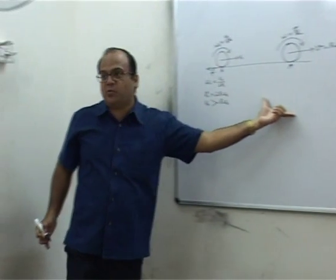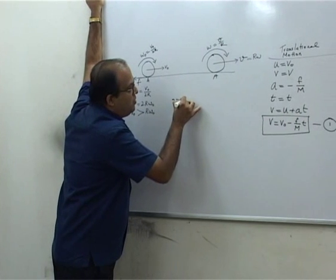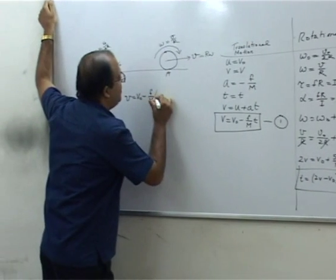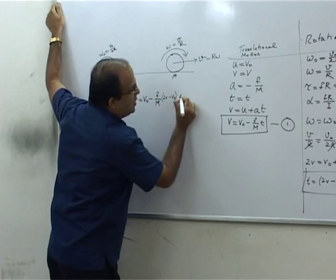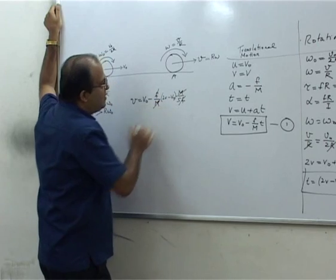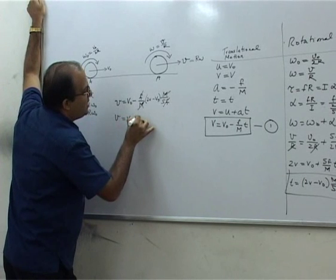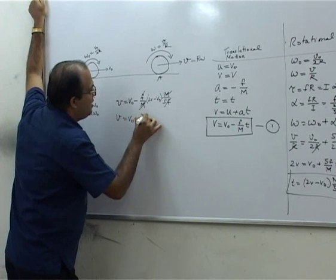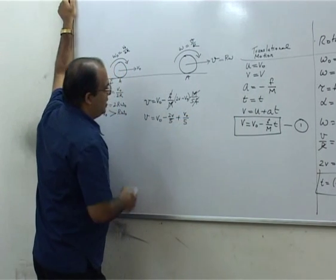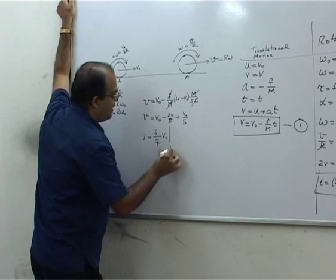Substituting this time into equation 1: v equals v0 minus f by m times (2v minus v0) times m by 5f. Friction and mass cancel out, giving v equal to v0 minus 2v by 5 plus v0 by 5. Simplifying, we get v equal to 6/7 v0. That is the answer.